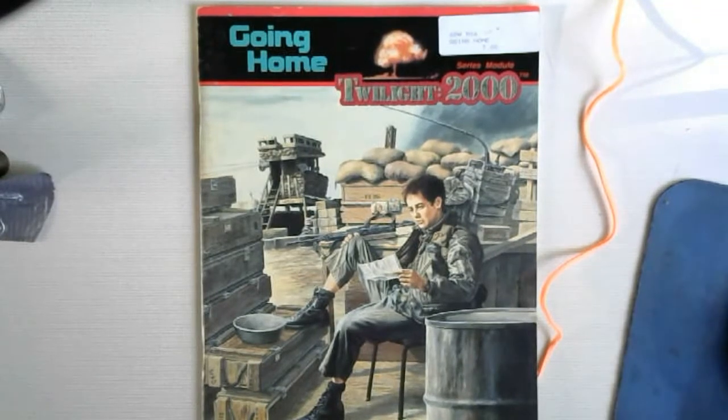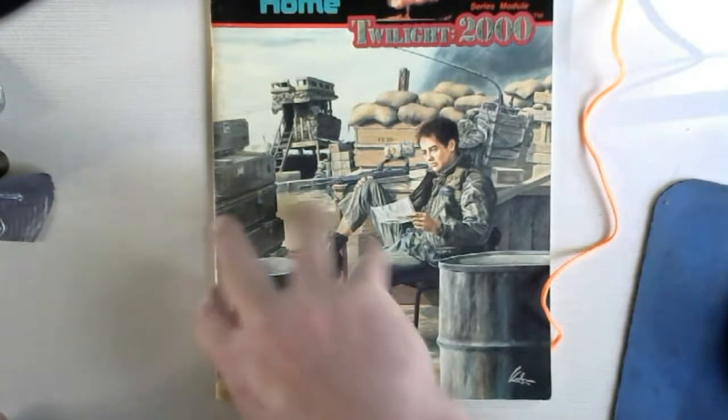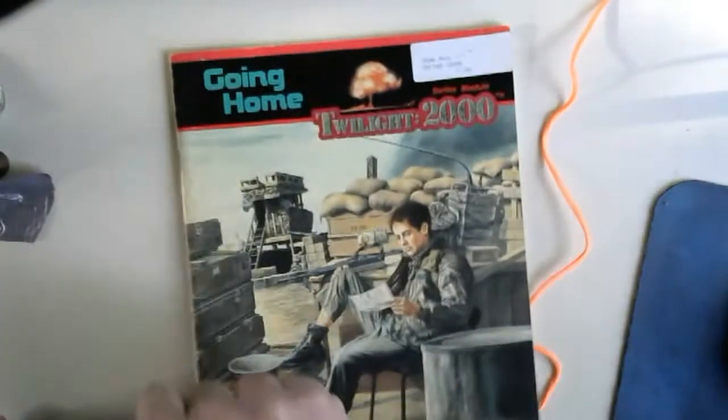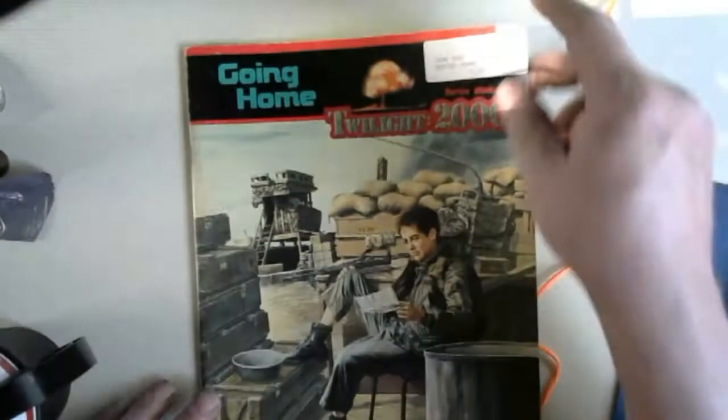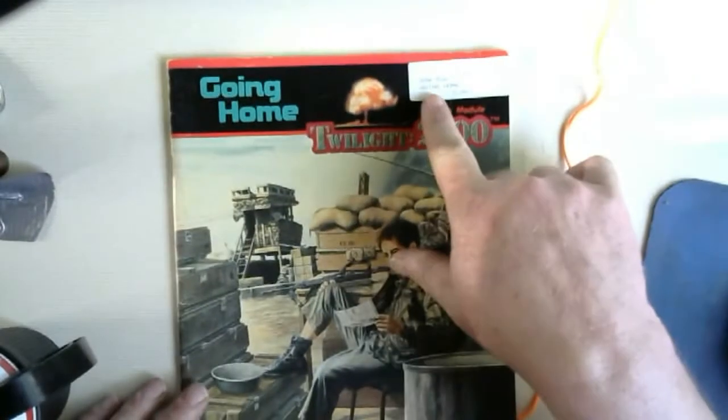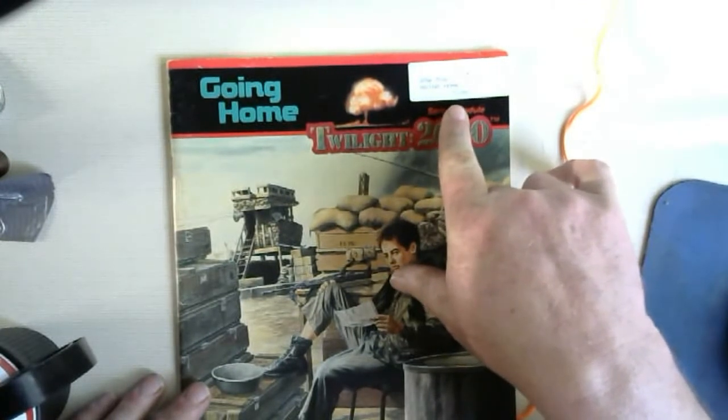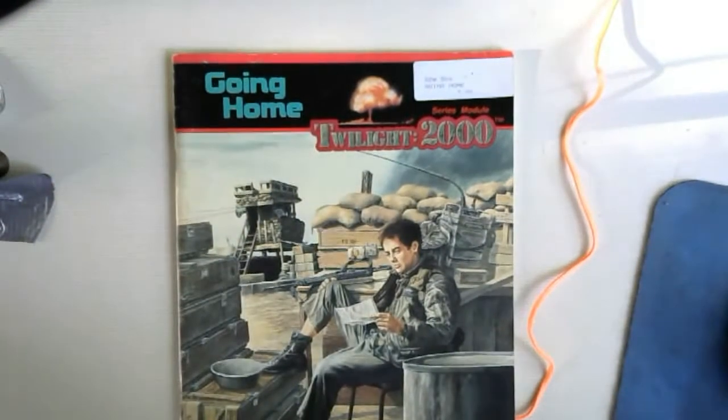Okay folks, this is Twilight 2000, circa 1980-1990, game system by Game Designers Workshop GDW. The title is Going Home, copyright 1986. The interesting thing is I still have the store tag up here - I might have purchased it in 1987 or so for seven dollars. I can't buy a module today for that by anybody's standard.